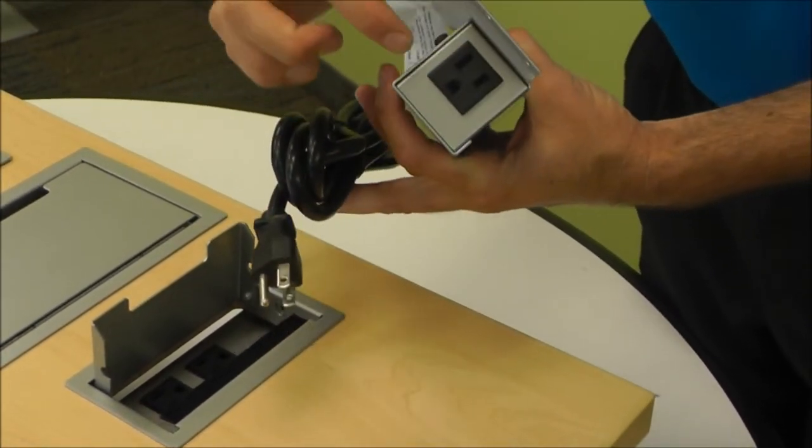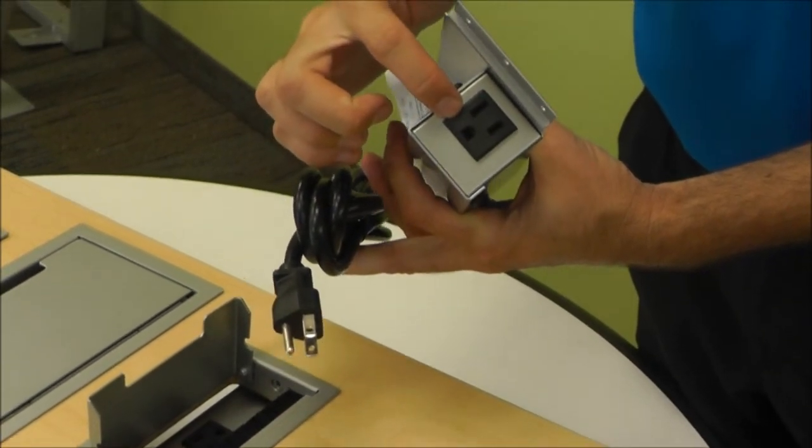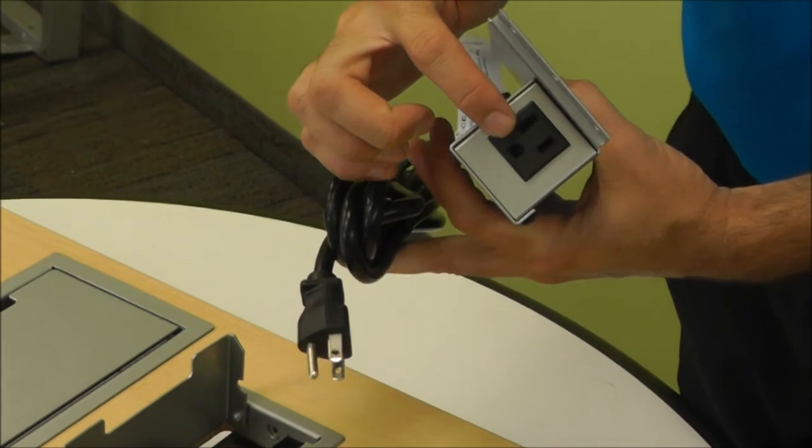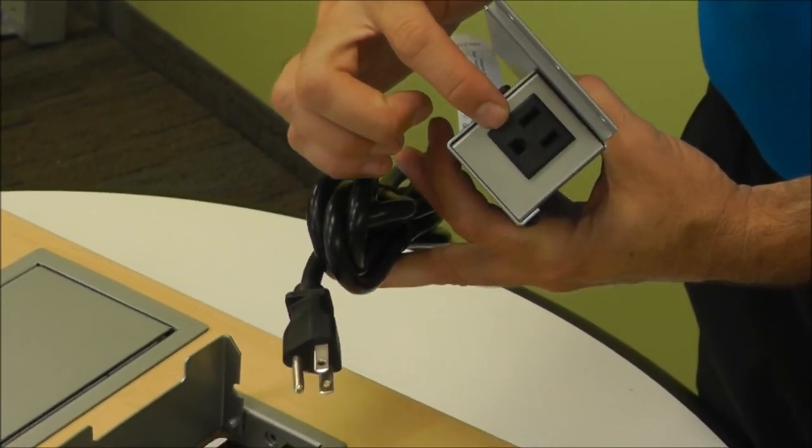Villa also has the same key feature that Flip and Go has in that it has another receptacle on the bottom of the unit. It's great for daisy chaining tables together.